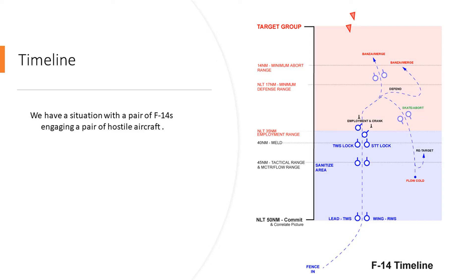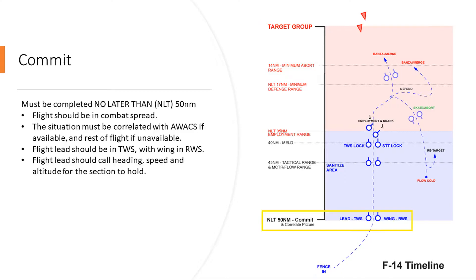Here we have a situation with the timeline imposed on the screen, where we have a pair of F-14s engaging a pair of hostile aircraft. Prior to 50 nautical miles — 50 nautical miles is the no-later-than for commit — the flight should be in combat spread and the situation needs to be correlated with AWACS if available, so you need to make sure you see the same picture that they do. It should also always be coordinated with the rest of the flight.